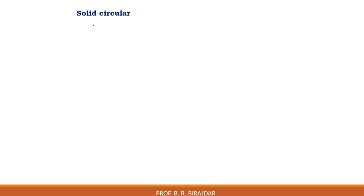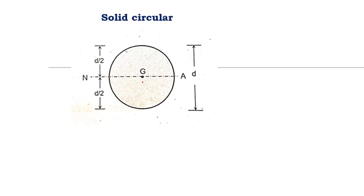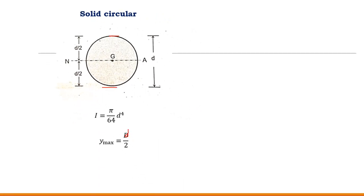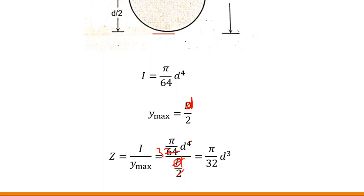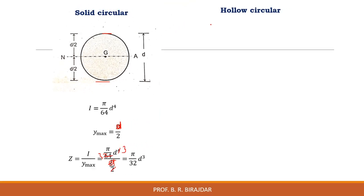For the solid circular section with diameter d, the neutral axis is at the center, so the distance to the outermost layer is d/2 both top and bottom. The moment of inertia is πd⁴/64 and y_max is d/2. Taking the ratio I/y_max: the 2 comes up to give 32, and one power of d cancels, resulting in the section modulus Z = πd³/32.